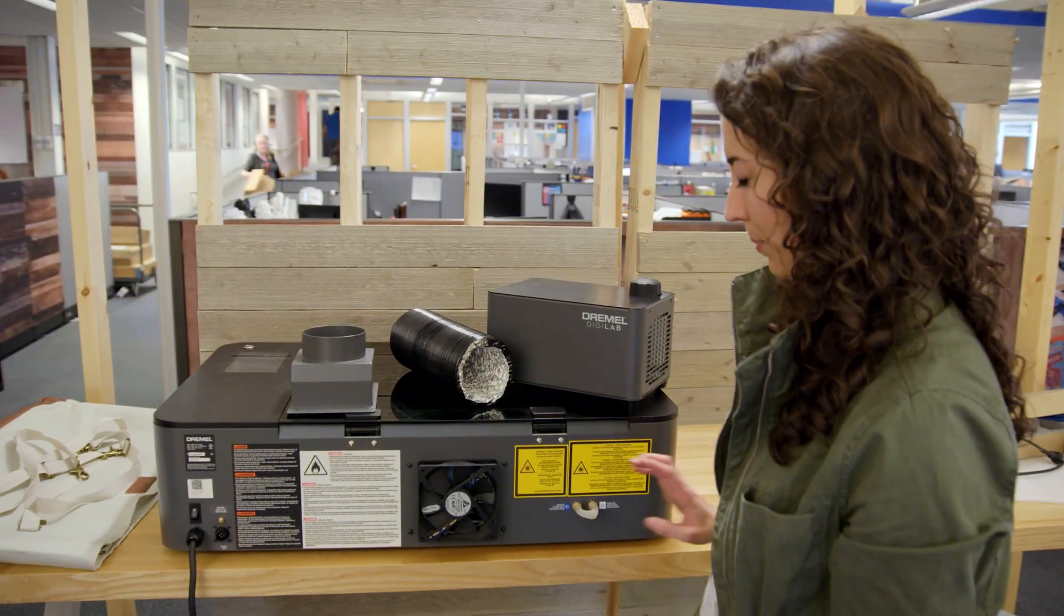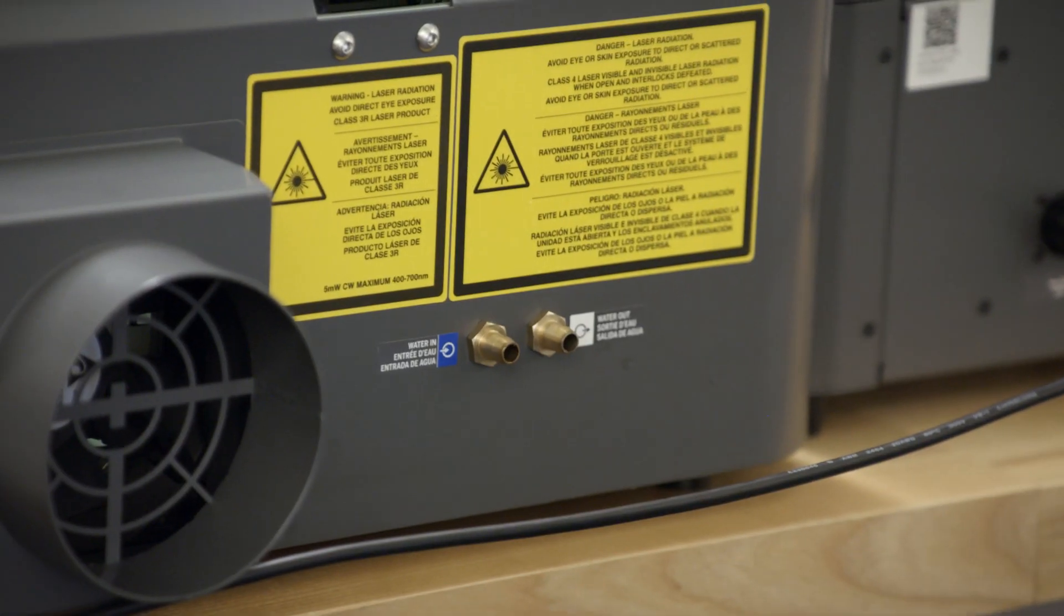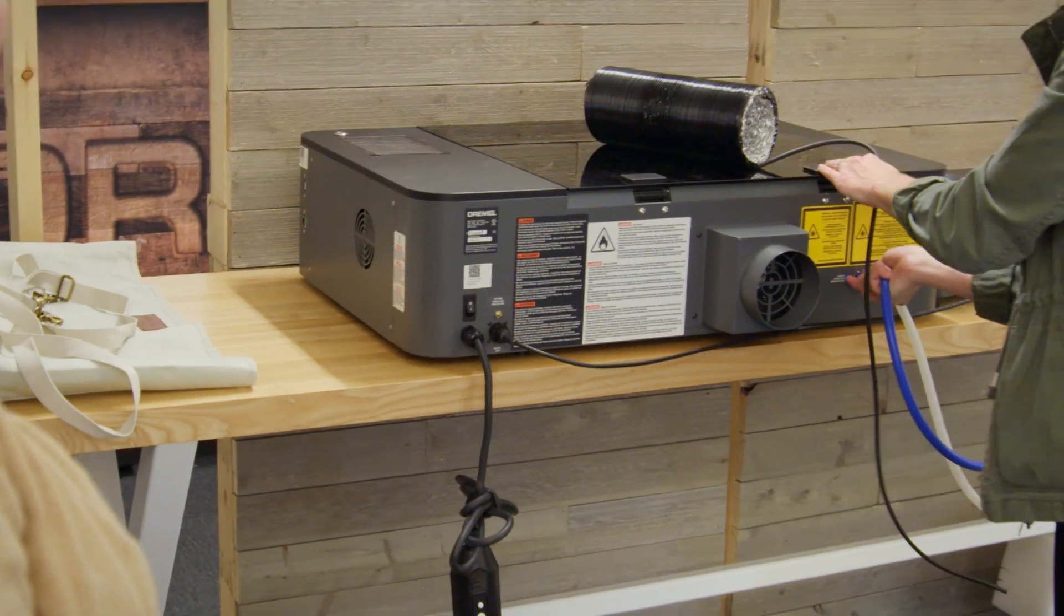Let's show you where some of these things go. You're going to start with the power cord. Then you've got your two water tubes. The clear one is here and the blue one is here.